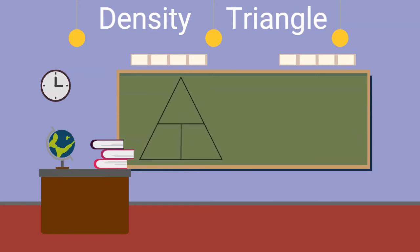Begin by drawing the density triangle. Next, place M for mass, D for density, and V for volume in the correct spaces.